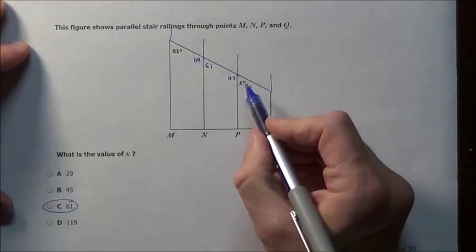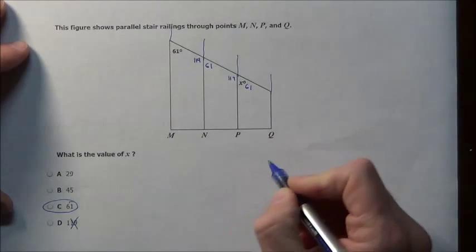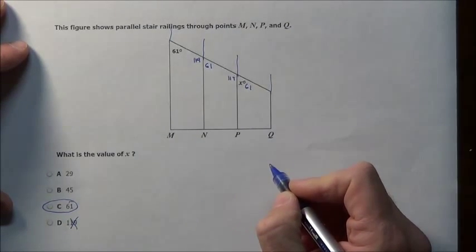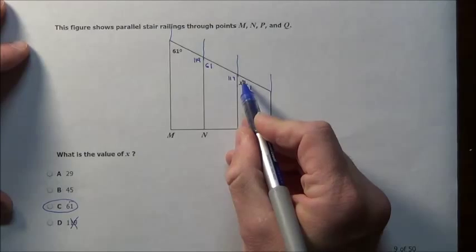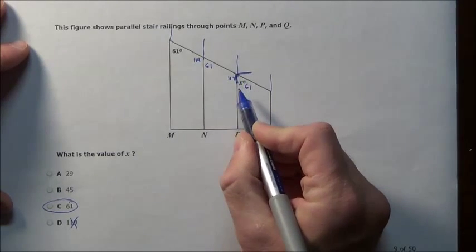Now please note, X is an acute angle. That means there's no way in the world it's 119. Also, when I look at X, it almost is at 90. It looks like that's going to be 90.